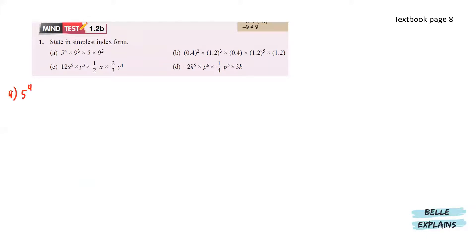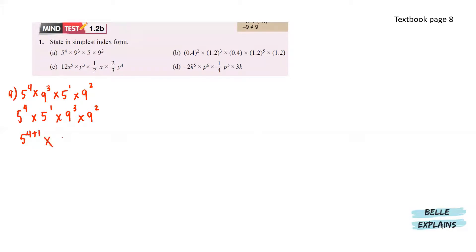Next, MindTest 1.2b — state the simplest index form. For a, we have 5 to the power of 4 times 9 to the power of 3 times 5 to the power of 1 and 9 to the power of 2. Since there are different bases, let's get 5 to one side and 9 to the other. So we'll have 5 to the power of 4 plus 1 and 9 to the power of 3 plus 2, giving us 5 to the power of 5 and 9 to the power of 5.